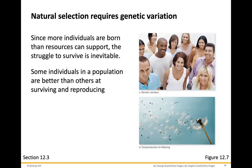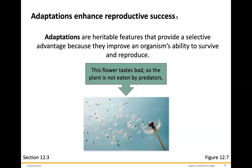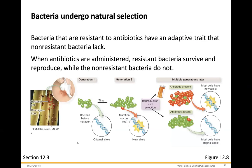Since more individuals are born than resources can support, the struggle to survive is inevitable. Some individuals in the population are better than others at surviving and reproducing. Adaptations are heritable features that provide a selective advantage because they improve an organism's ability to survive and reproduce. Bacteria undergo natural selection: bacteria that are resistant to antibiotics have an adaptive trait that non-resistant bacteria lack.